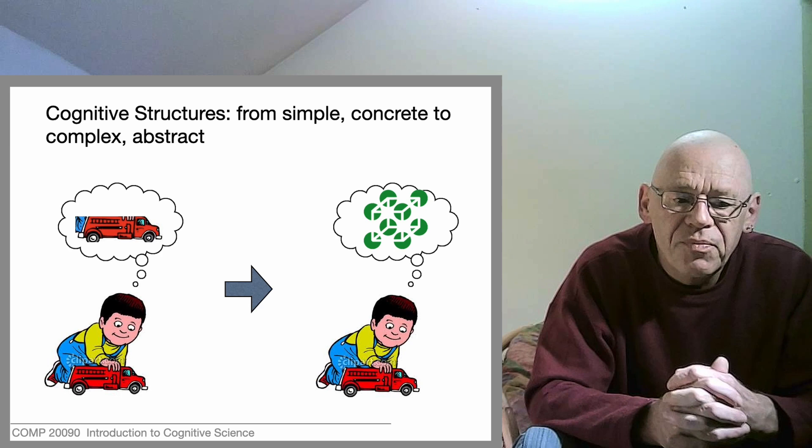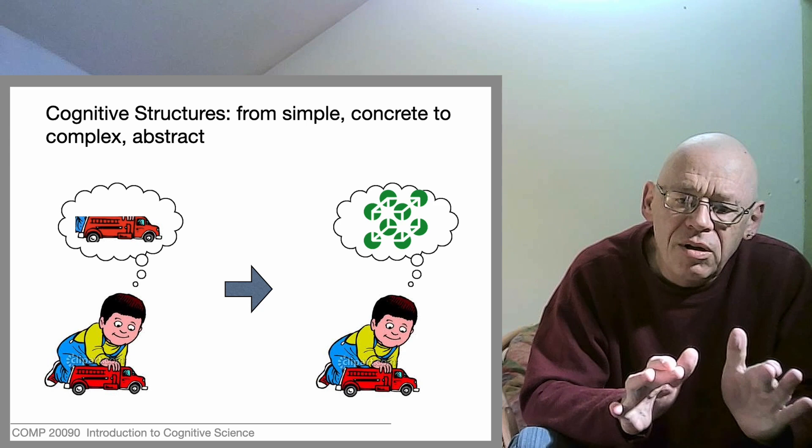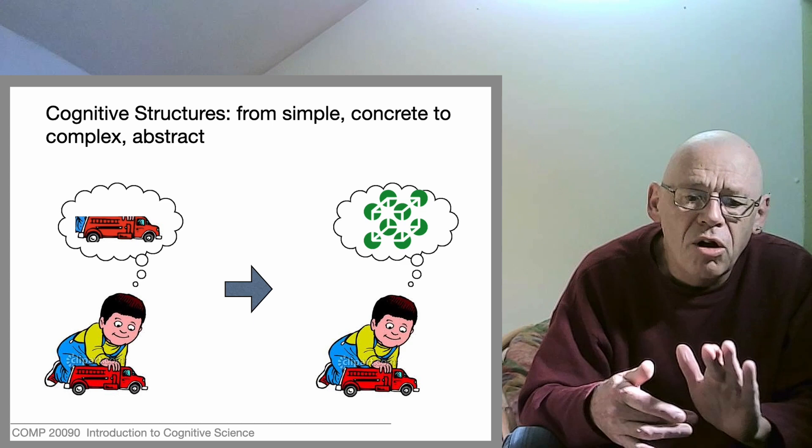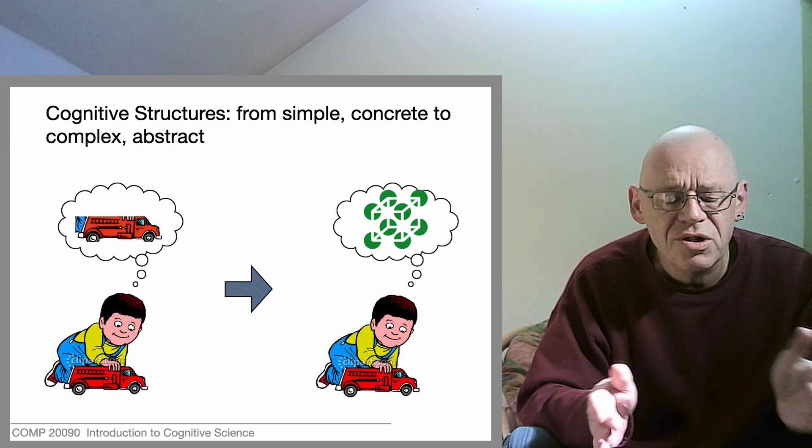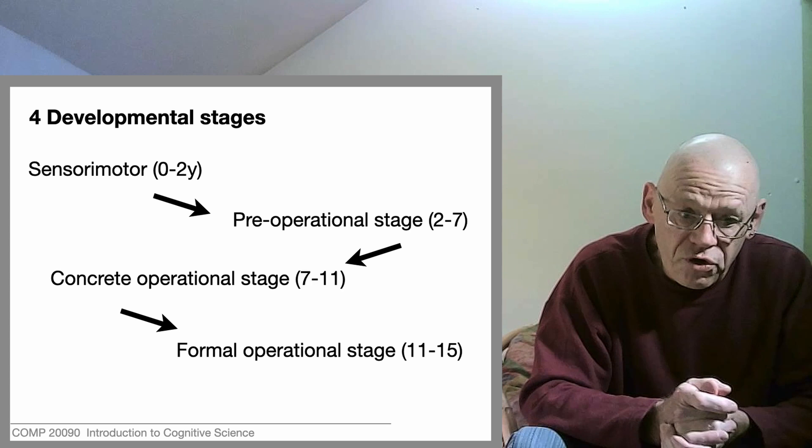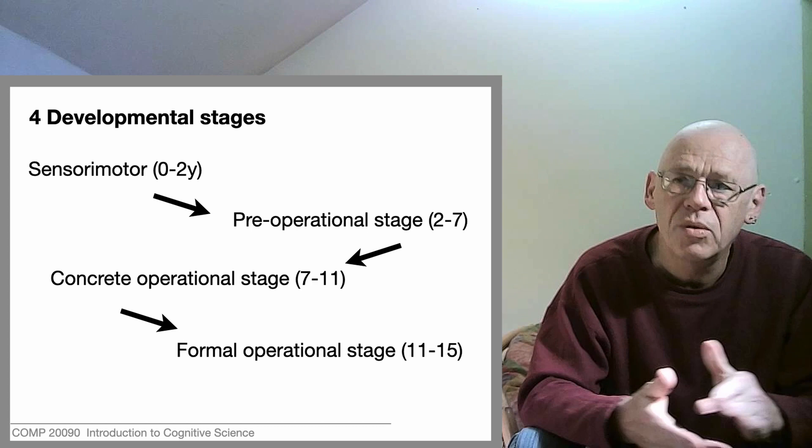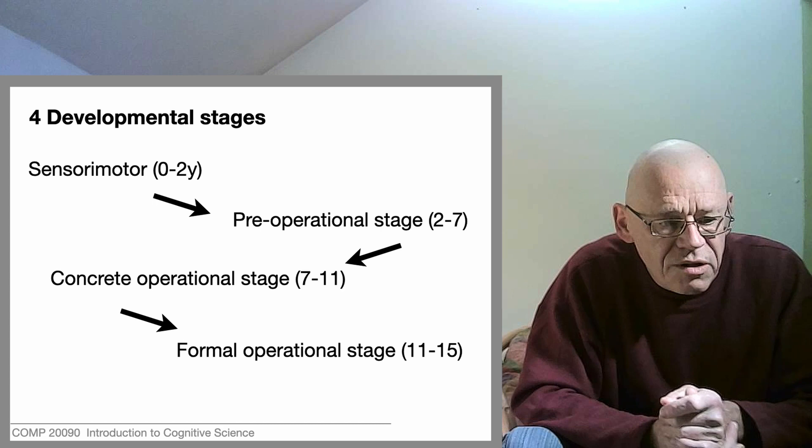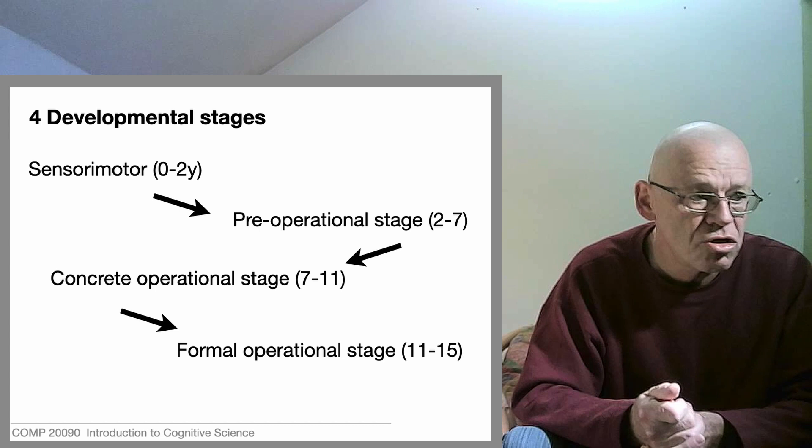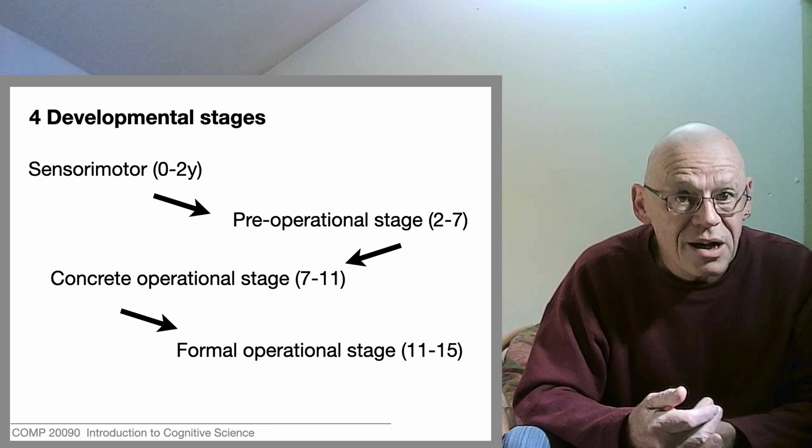Piaget is interested in the period between about birth and age 15. He chose to identify four stages. The first is the sensorimotor stage from birth to about two years. That's the only one that has a fairly clear definition—it's the period in which you're not expected to be a language user. After age two you are expected to be a language user and that's going to change everything obviously.